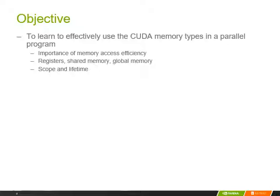We'll start by analyzing the importance of memory access efficiency and analyze how the memory access throughput can be a limiting factor of the execution throughput of a massively parallel processor. We then go over registers, shared memory, and global memory, with an emphasis on the scope and lifetime of variables declared in these memory types.